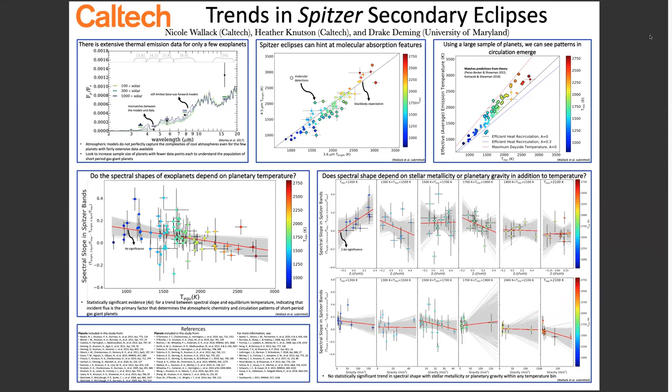There are only a few planets that have extensive thermal emission data available and there's been difficulty matching models to these data. So it's been hard to see the full picture of the thermal emission of short period gas giants. Instead of focusing on the few planets with extensive data sets, we decided to focus on the entire population of short period gas giants with warm Spitzer data.